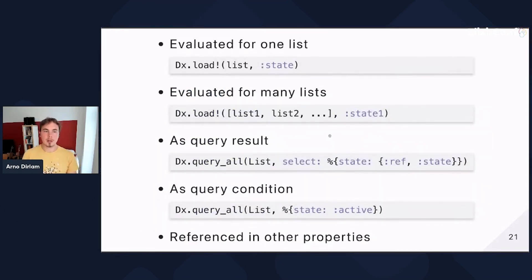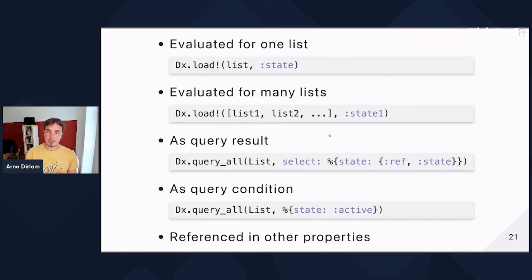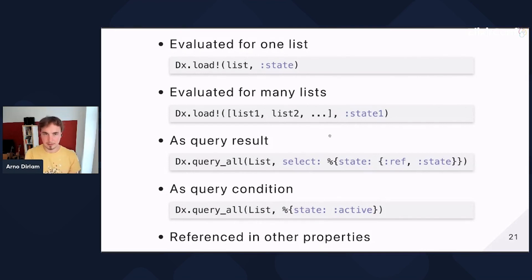You can use this in multiple ways. You can load the state for a single list using DX.load — for example, it returns :active. It works for one or many lists — for many, it returns the state of each. You can use it in a query result selecting state as a property (just as you'd select a field). You can filter by it as a query condition, and DX will even translate it to SQL for efficient database-side querying. Or you can reference your properties in other rules to compose your business logic.